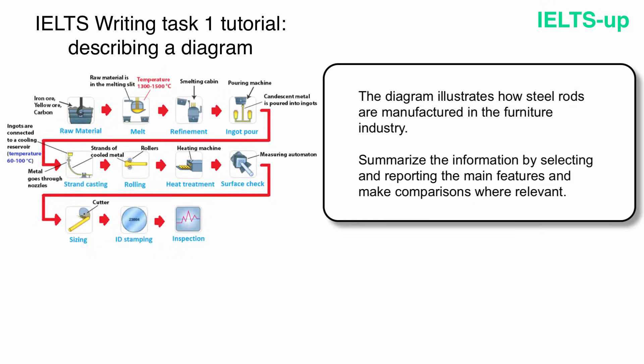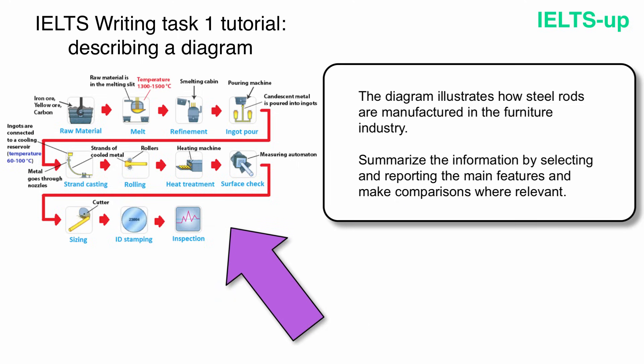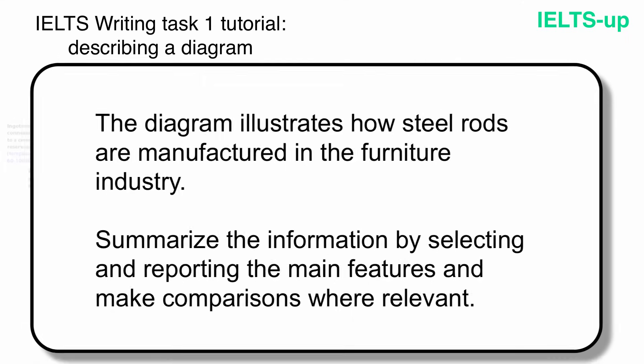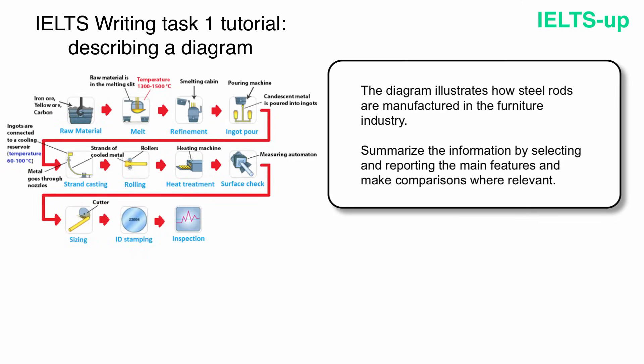Here is how a writing task 1 question with a diagram may look like. You've got a question card that gives you some basic information about your diagram, and you've got the diagram which you should describe in your own words. The question card says: the diagram illustrates how steel rods are manufactured in the furniture industry. Summarize the information by selecting and reporting the main features and make comparisons where relevant.